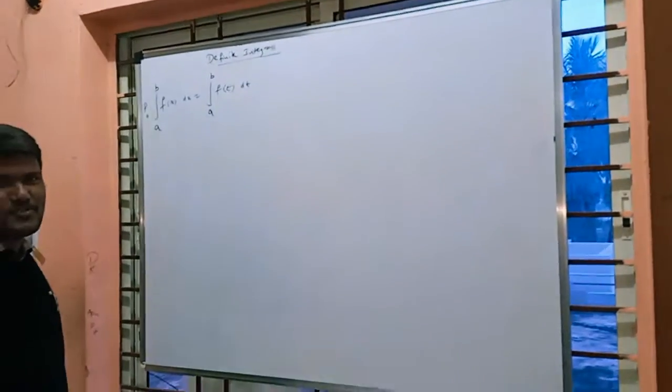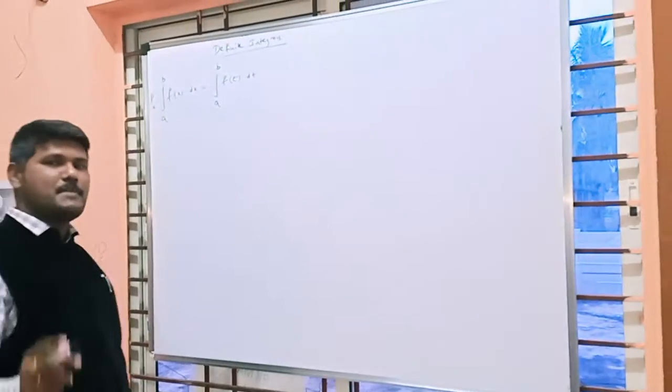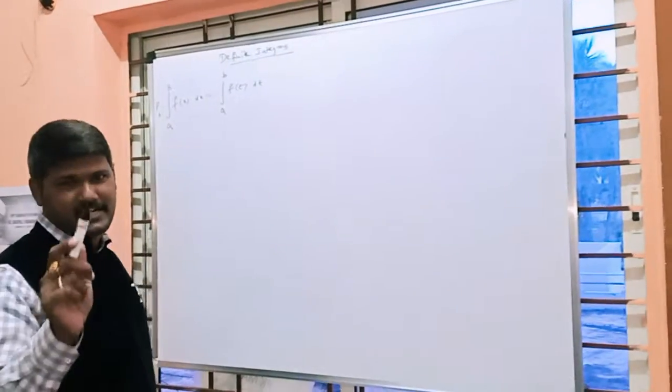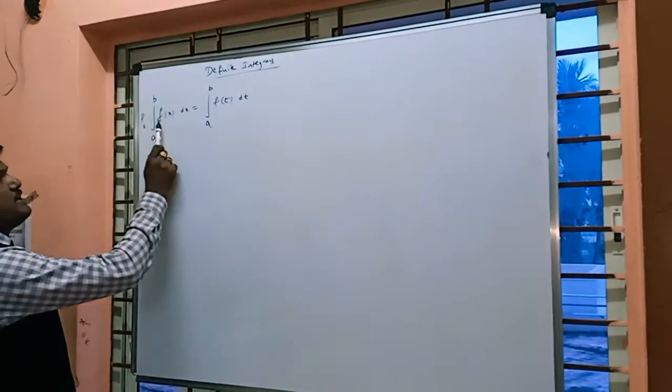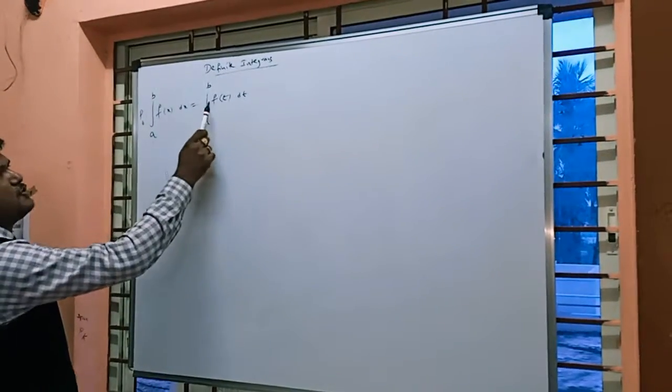Welcome to PKMast channel. Today we are discussing important properties in definite integrals. The first property: integral a to b f(x)dx is equal to integral a to b f(t)dt.